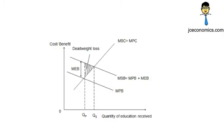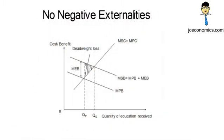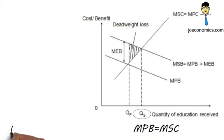Referring to the diagram, assuming there are no negative externalities in consumption, MSC equals MPC. The socially optimum level is at QS where MPB with perfect information is equal to MSC.